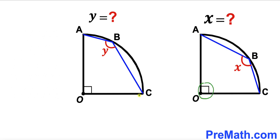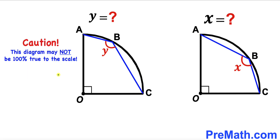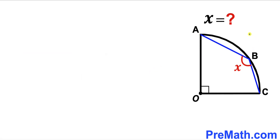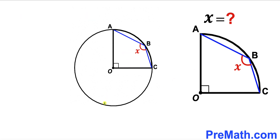Please bear in mind that both of these angles are 90 degrees each. Don't forget to give a thumbs up and subscribe, and keep in mind that this figure may not be 100% true to scale. Now we are going to take care of the first problem to find the value of X. We are going to think outside the box and consider the whole circle, of which this quarter circle is a part.